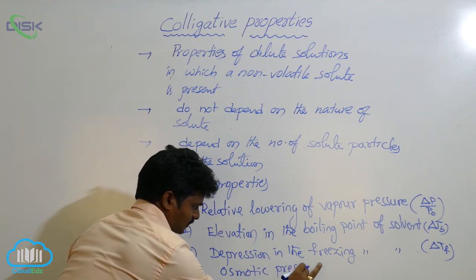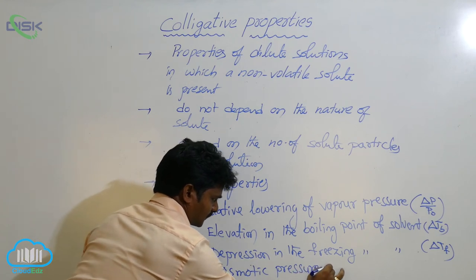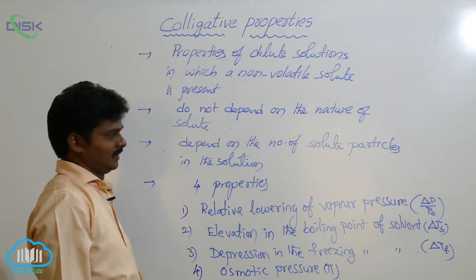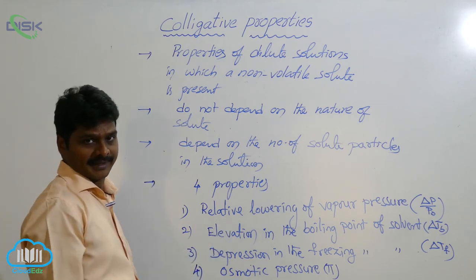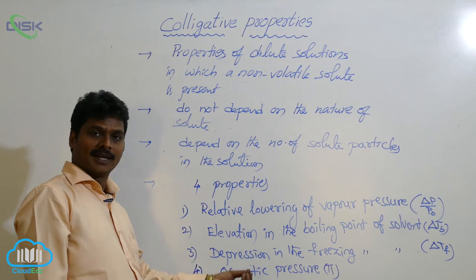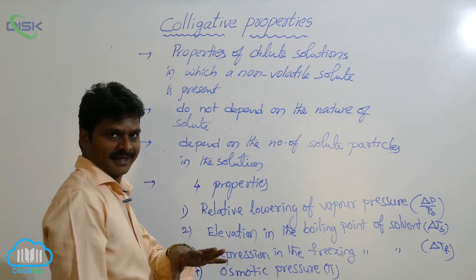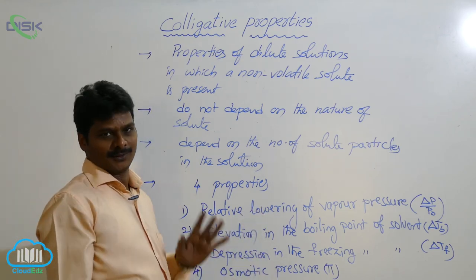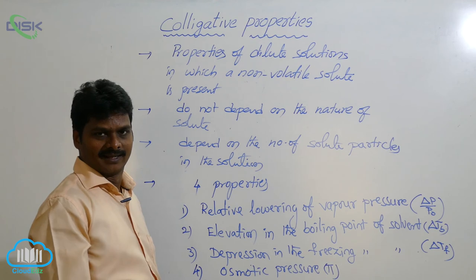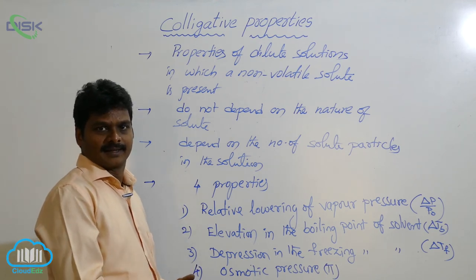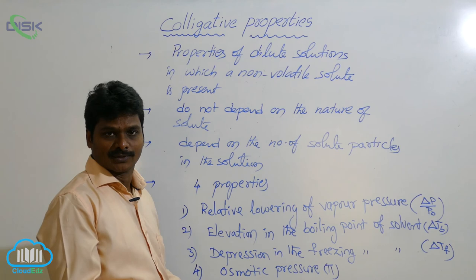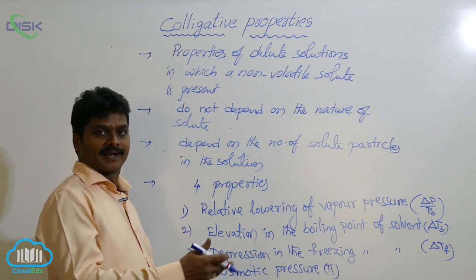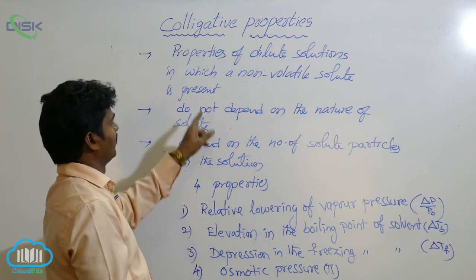Fourth: osmotic pressure of solution, denoted by π. So these four are colligative properties. They depend only on the number of solute particles present in the solution and do not depend on the nature of solute. The properties of dilute solutions which depend only on the number of solute particles but not on the nature of solute are called colligative properties.